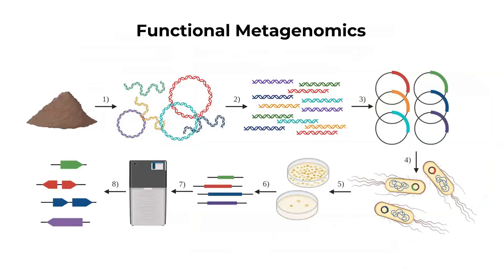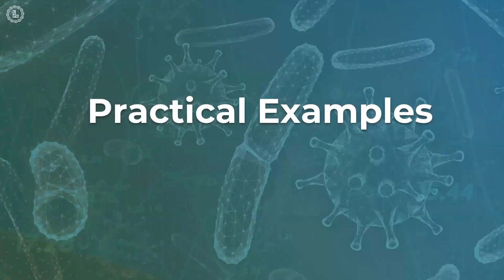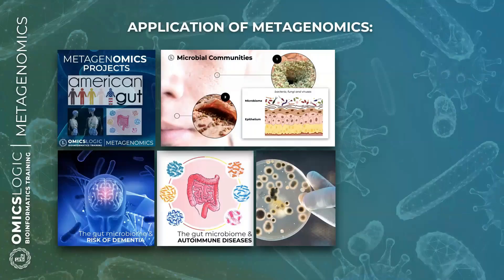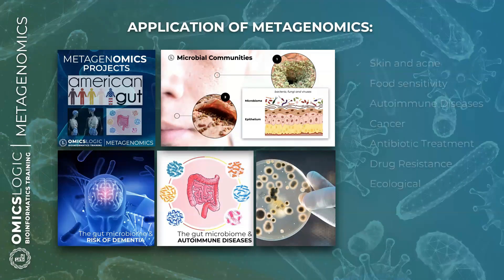We will also learn about the basics of functional metagenomics, which explores the genetic potential and metabolic activities of microbial communities in a given environment. What kind of projects can be studied using metagenomic sequencing? There are many applications, including skin conditions, food sensitivity of the gut, autoimmune disorders, cancer, antibiotic resistance, drug resistance, and ecological studies.